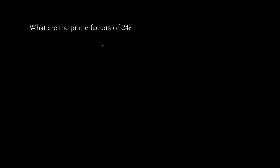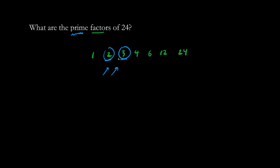What are the prime factors of twenty-four? First let's list the factors. We have one, two, three, four fits in, so does six, twelve, and twenty-four. Now the word prime means that the number has to be a prime number, which includes two and three. These are not prime because we can divide by two. So the only numbers that are prime factors are two and three.